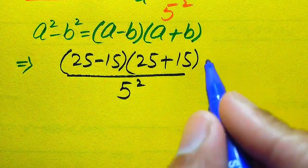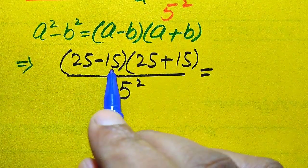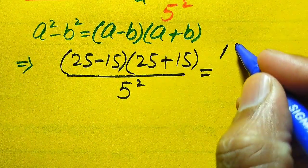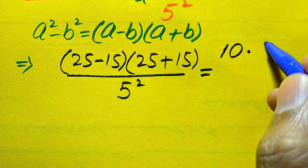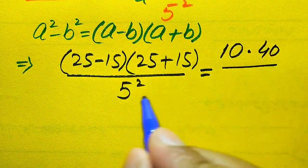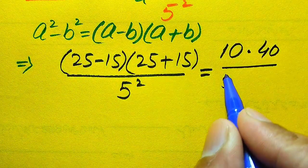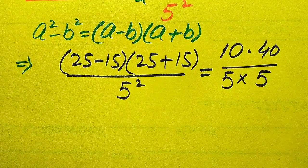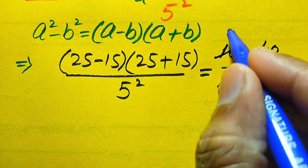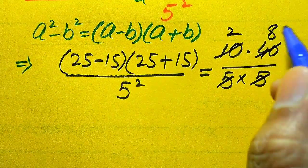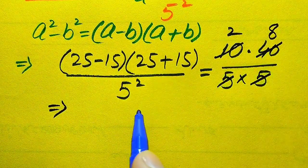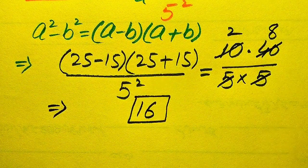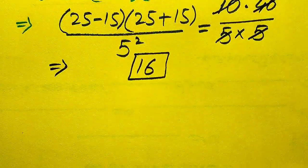In the next step, 25 minus 15 equals 10 and 25 plus 15 equals 40, divided by 5 squared, which we write as 5 multiplied by 5. Now we cancel the terms: 10 is 5 times 2, and 40 is 5 times 8, so we get 2 times 8 equals 16. Again in the second method the simplified answer is 16.